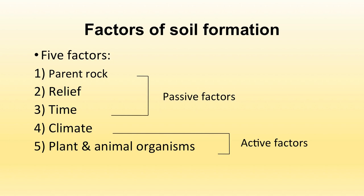There are five different factors that result in soil formation: first is the parent rock, second is the relief, third is time, fourth is climate, and fifth is plants and animals or organisms. The first three are known as passive factors and the last two — climate and organisms — are known as active factors of soil formation.